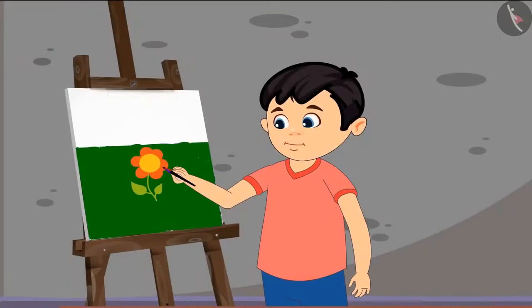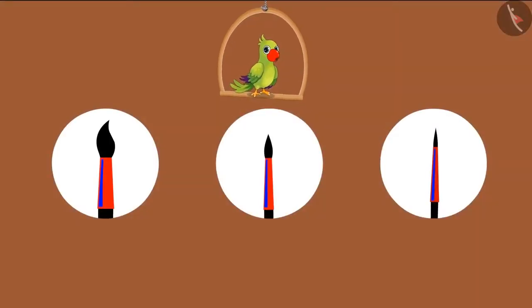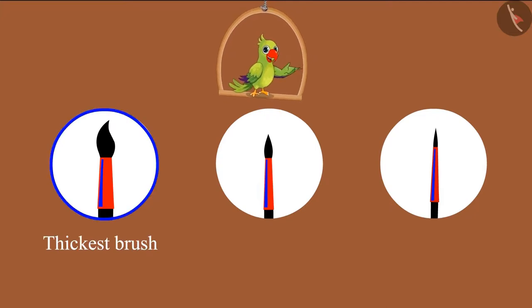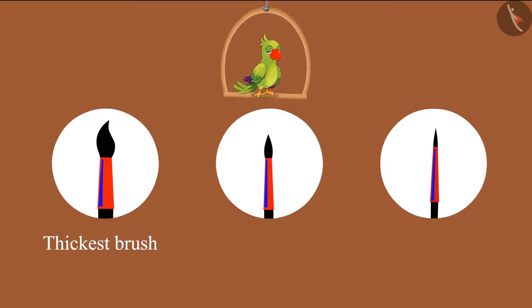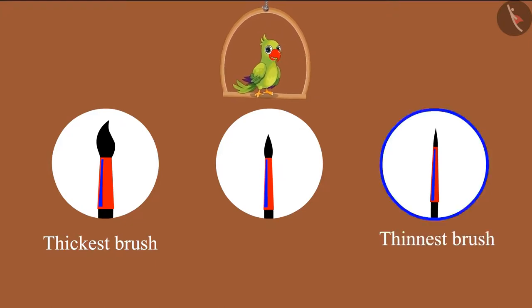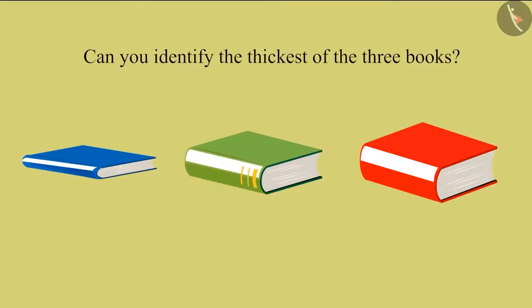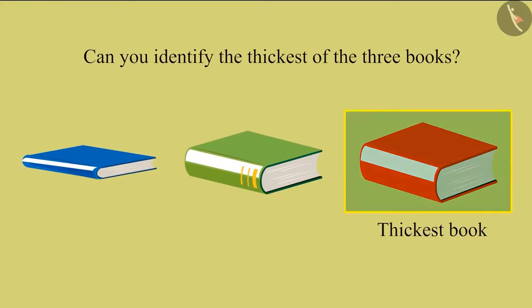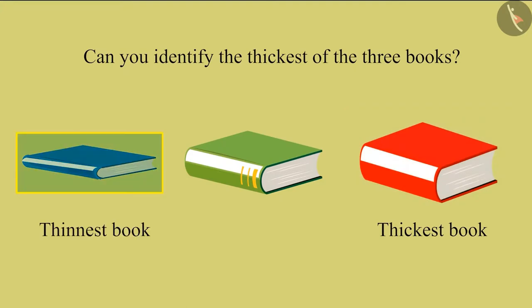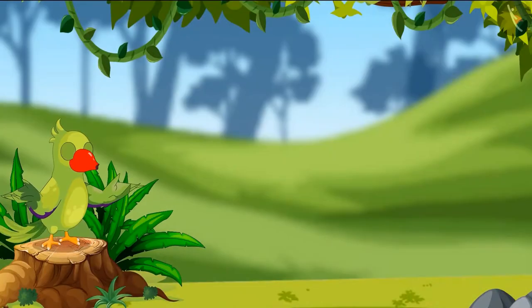Choto finishes his painting quickly. So children, did you see that? Choto used the thickest brush to paint the green field and the thinnest brush to paint the plant. So children, can you tell me which of these three books is the thickest book of all? This is the thickest book, and this is the thinnest book. That's all for today.